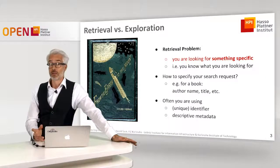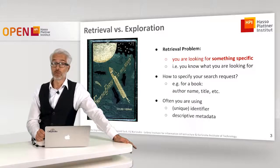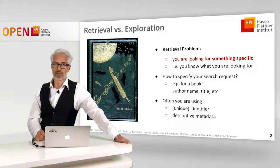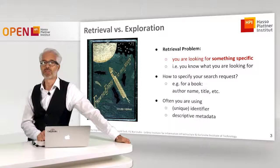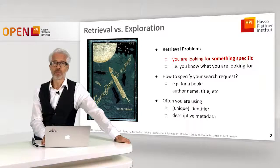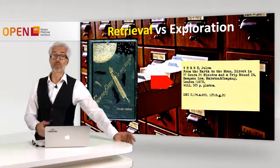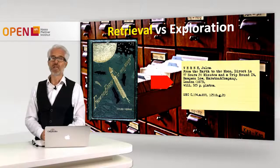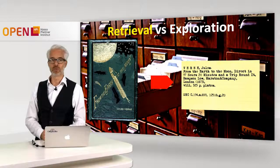Let's start with retrieval. For example, if you are looking for a specific book in a library, usually you are looking for something rather specific and you already know what you are looking for. You are looking for a book written by some author with a title — a unique identifier like author and title, or some descriptive metadata. You ask the friendly librarian or look up the book in the library index with the name of the author, say Jules Verne, and the title. You find a card indicating the location of the book inside the library and pick it up.